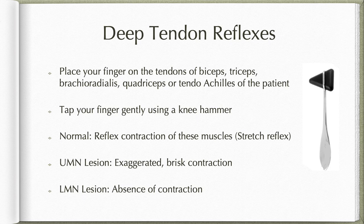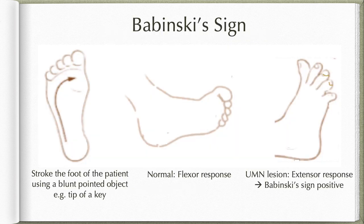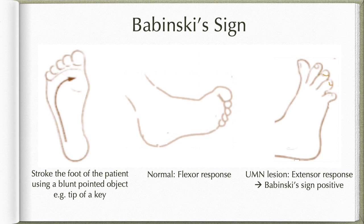To elicit Babinski sign, stroke the sole of the foot using a blunt pointed object like the tip of a key, in the direction shown in the diagram. A normal response is the flexor response wherein all the toes will plantar flex. In upper motor neuron lesion, however, there is an extensor response wherein the great toe is extended and the rest of the toes spread out — this is called a positive Babinski sign, a classic feature of upper motor neuron lesion.